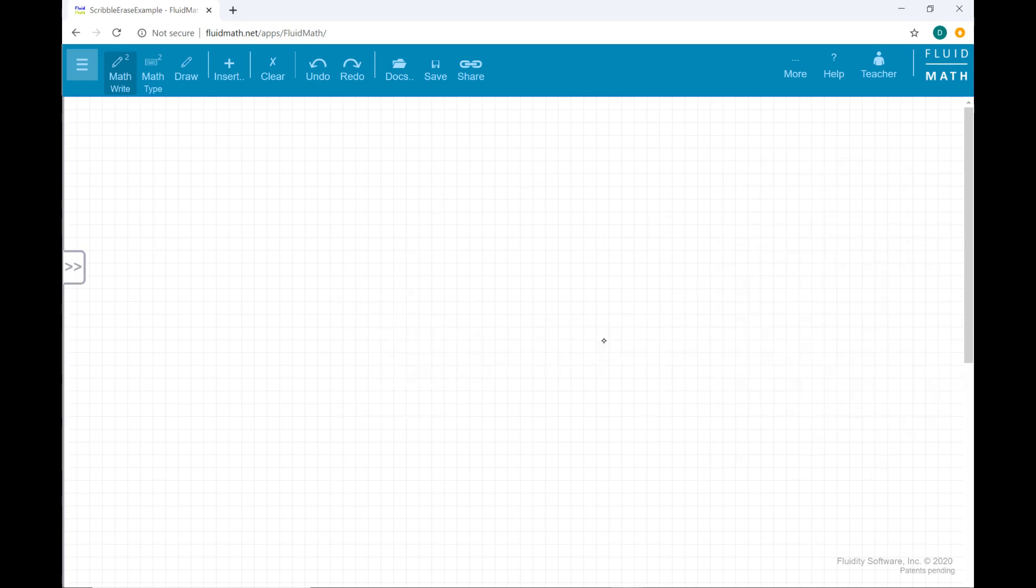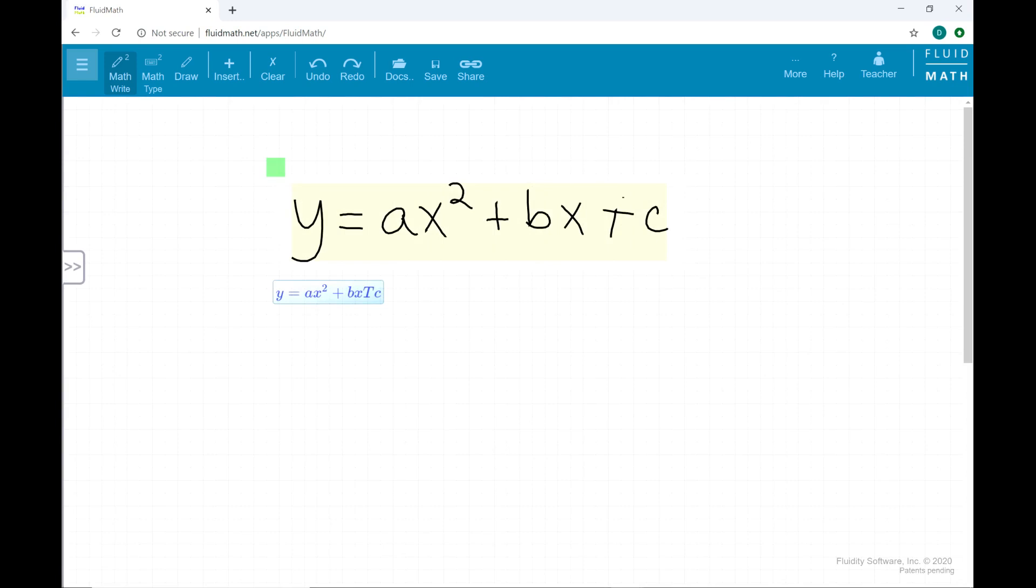Also, if you have written a long expression and fluid math does not recognize part of it, you only have to erase and rewrite that part of the expression. For example, in this expression, you can see that the second plus symbol before c was written poorly and not recognized as a plus. In this case, instead of erasing the entire expression and rewriting it, you can just erase the poorly written plus and rewrite it.